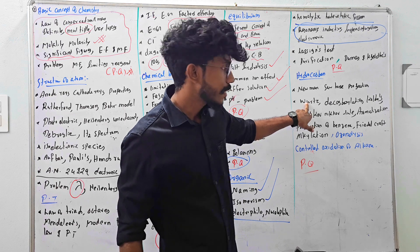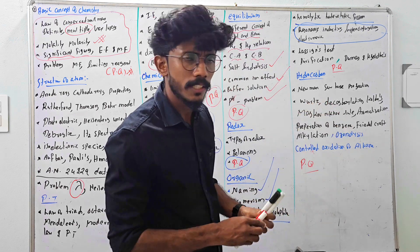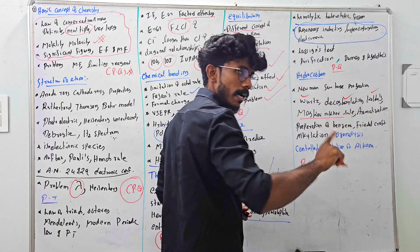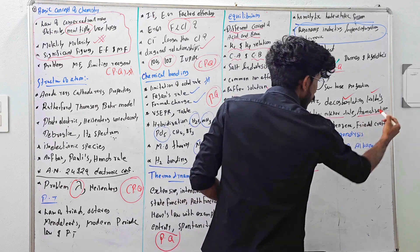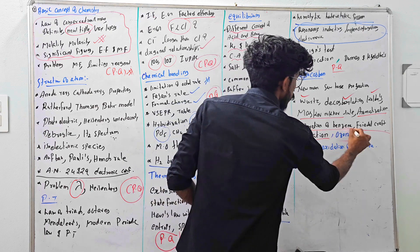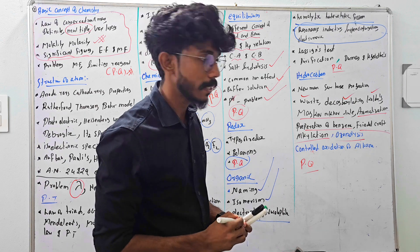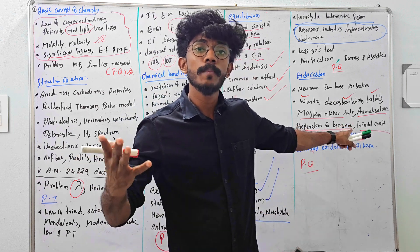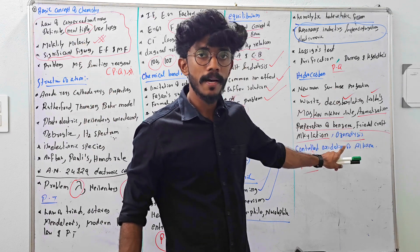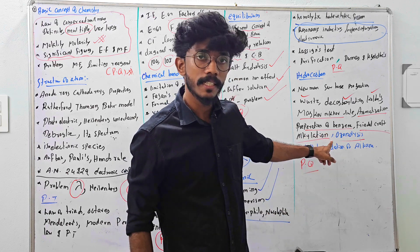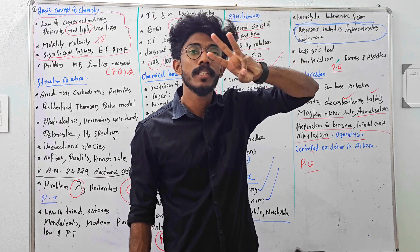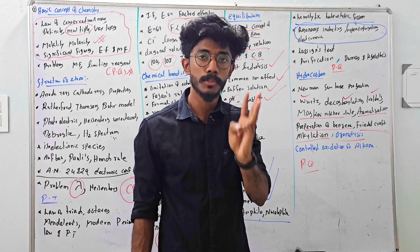Next, Wurtz reaction. I have written five reactions: Wurtz reaction, decarboxylation, Kolbe's reaction, Markovnikov, anti-Markovnikov, Reimer-Tiemann reaction, Friedel-Crafts alkylation, ozonolysis, and all preparations of benzene — two to three reactions. I am going to examine the addition of halogens and red-hot iron as a catalyst. If you learn the benzene reactions, you will learn those reactions. The alkylation of benzene and the reactions involving hydrogen in benzene — three different reactions — are important.